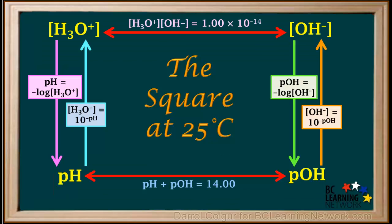Here's the square at 25 degrees. It shows all the formulas you can use to make one-step or two-step conversions among hydronium ion concentration, hydroxide ion concentration, pH, and pOH. It would be good if you could draw something similar to this from memory — it will help you with calculations you'll be required to do. You may want to pause the video, take a screenshot, and print yourself a copy to work with.